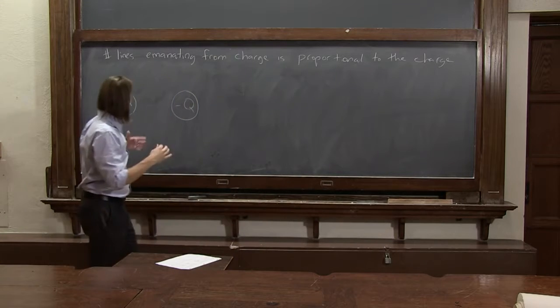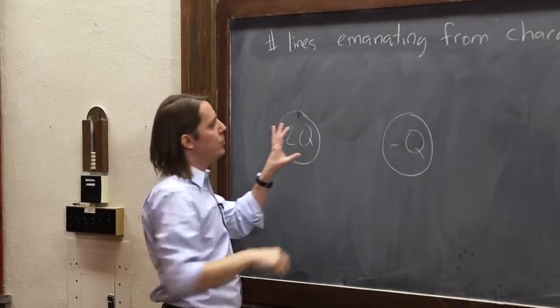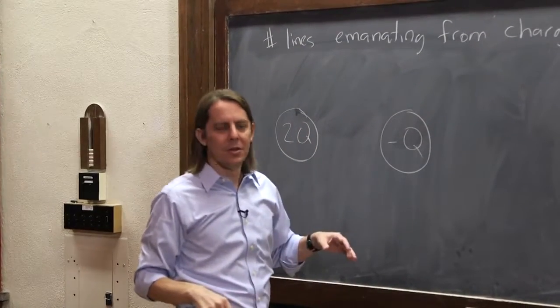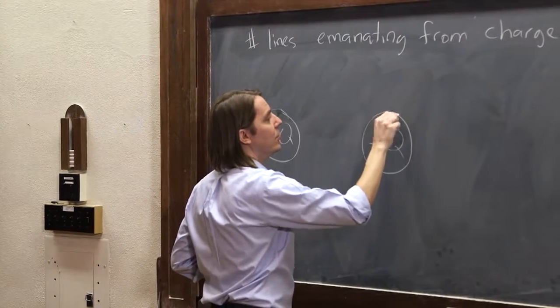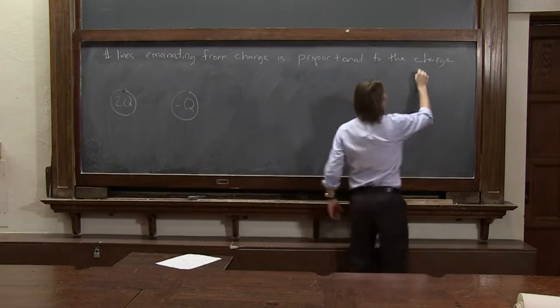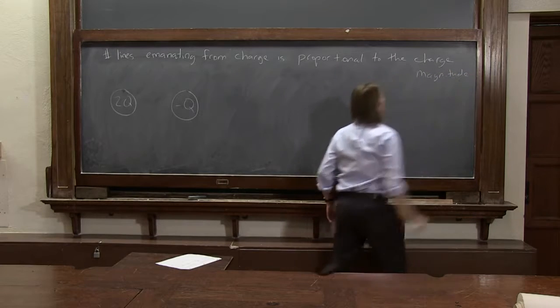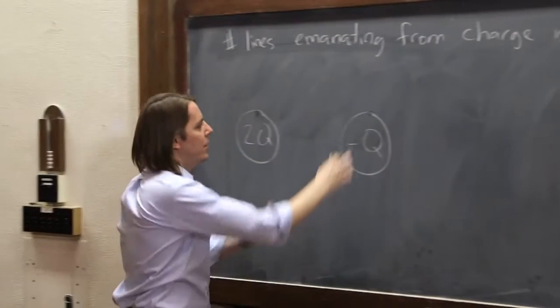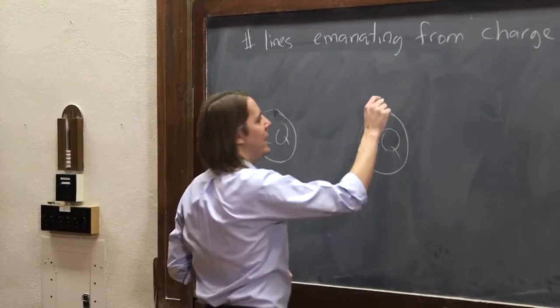What that means is if I'm going to try to draw this one, I have to have twice as many lines going from 2q as I have going from minus q because it has twice as much magnitude of charge. So let's say something that has a magnitude of q, we're going to put eight lines on.